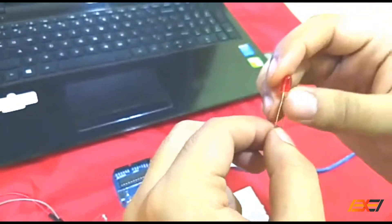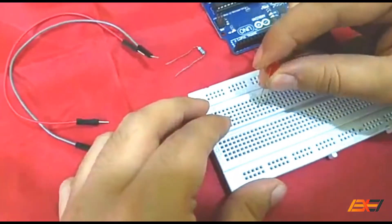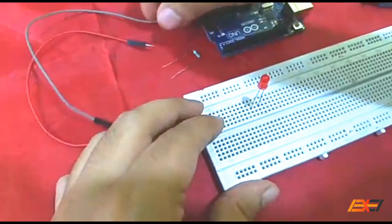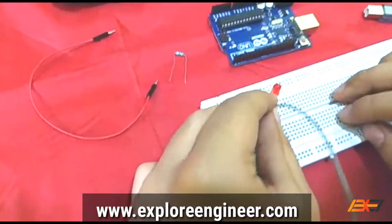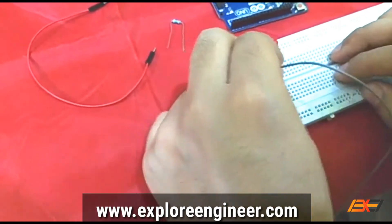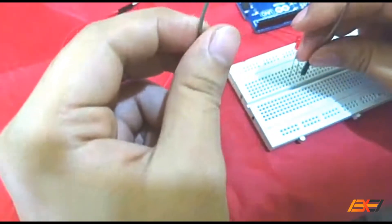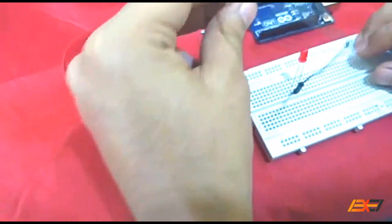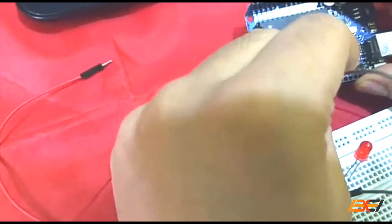We are going to place this in the breadboard. Then we take the jumpers from the anode and place them directly to the Arduino board in digital pin 8.